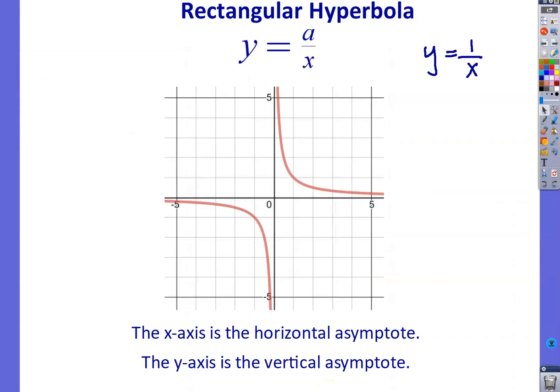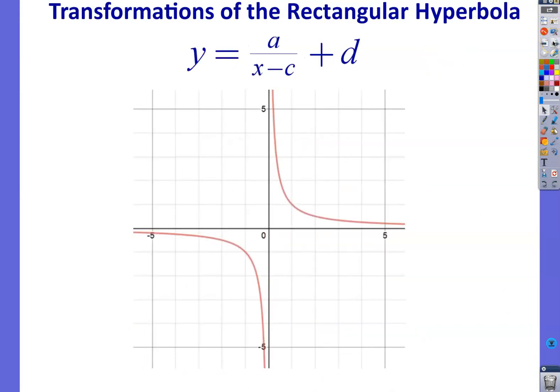Okay, let's have a look at some other transformations. Okay, so here's the basic equation. A over x minus c, all plus d. So let's have a look at the effect of c and d on the hyperbola.